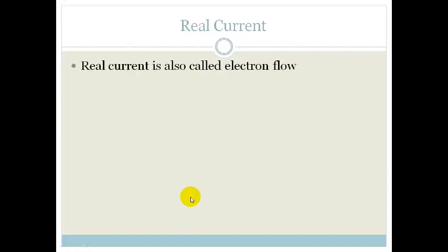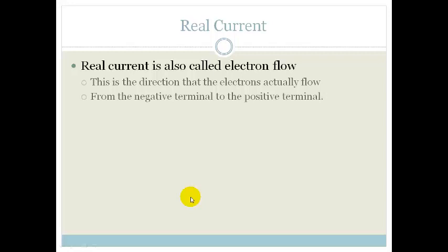The real current is called electron flow. This is the direction that the electrons actually flow, from the negative terminal to the positive terminal. Why do we need to know this? Later on, many years from now, you'll actually need to use that. But by convention, we said that charge flows from positive to negative, and we use that with all our rules.